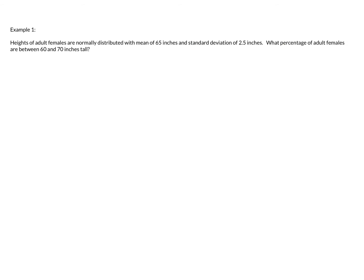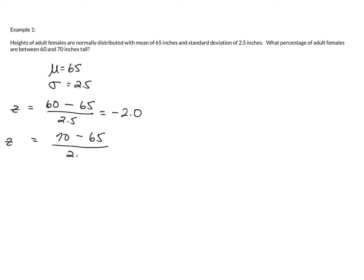Let's take a look at an example. Heights of adult females are normally distributed with a mean of 65 inches and a standard deviation of 2.5 inches. What percentage of adult females are between 60 and 70 inches tall? We calculate the z-score for each value: 60 minus 65 over 2.5 equals negative 2, and 70 minus 65 over 2.5 equals positive 2.